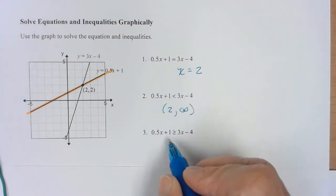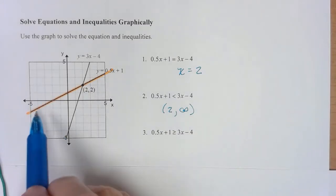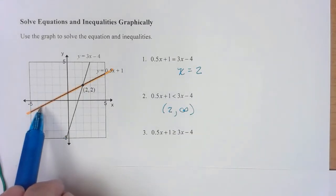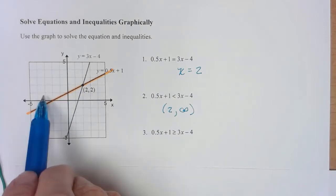This one, I want to know when is my orange line greater than or equal to 3x minus 4. Well, I said a little bit earlier, my orange line with respect to its y values is larger than this other one on this side to the left of 2.